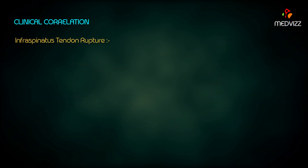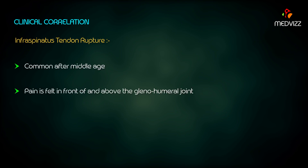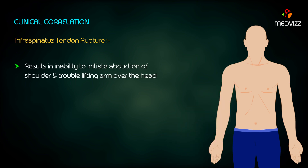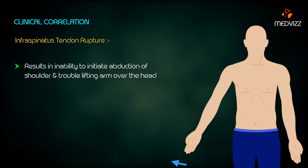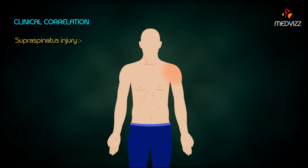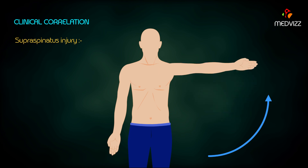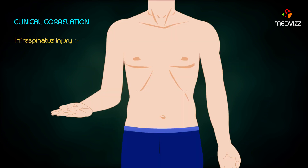Infraspinatus tendon rupture becomes more common after middle age. Pain is felt in front of and above the glenohumeral joint and is more severe during shoulder movements. It results in inability to initiate abduction of the shoulder and trouble lifting the arm over the head. A patient with supraspinatus injury usually presents with pain during any shoulder movement and inability to abduct the arm initially, but ability to abduct freely after, as the deltoid takes over the abduction. Injury to the infraspinatus alone only produces inability to rotate the shoulder externally, without any other problems.